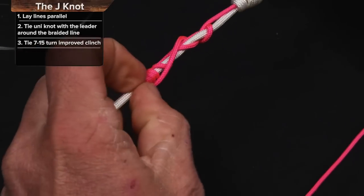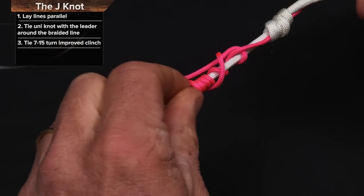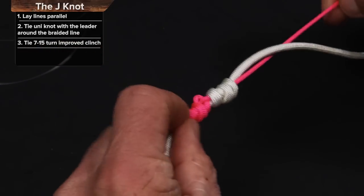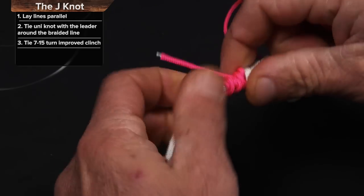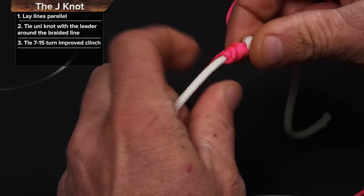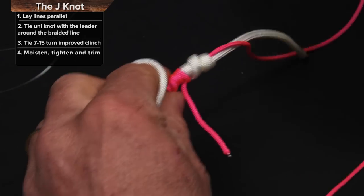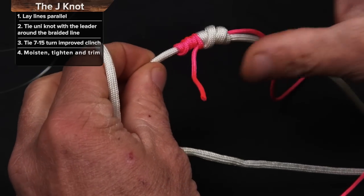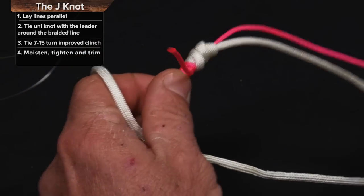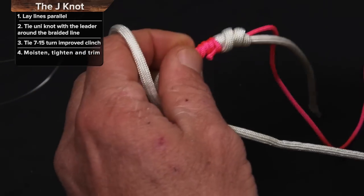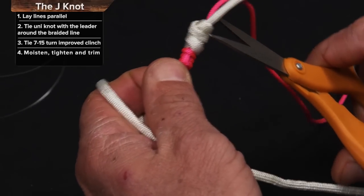It doesn't work quite as good as fluorocarbon on the braid, but I'll show you how it will pull down, and then we'll look at it with the real deal. So that's it. Uni knot to an improved clinch. We'll just simply trim off the tag ends right here.